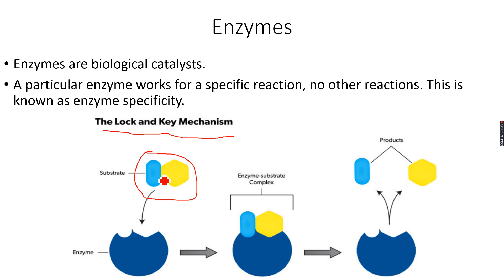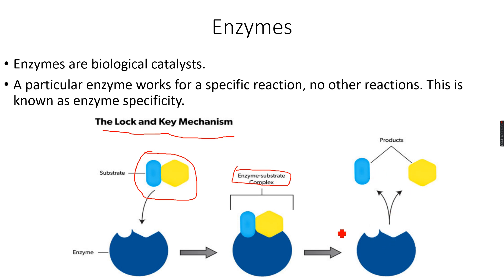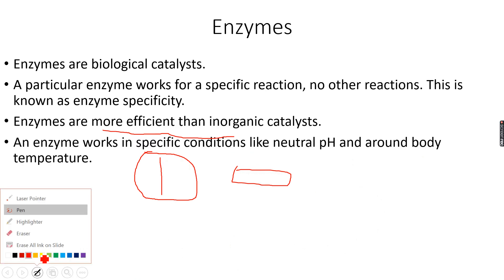A substrate molecule — in the case of amylase, that's starch — comes and attaches to the enzyme. The shape of the substrate is such that it fits exactly onto the enzyme. When it attaches, an enzyme-substrate complex is formed, the bonds within the starch are broken, the products are formed, and they move away from the enzyme. This is the lock and key mechanism, and it demonstrates enzyme specificity.